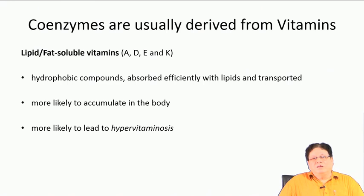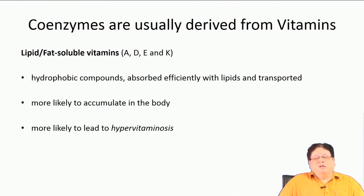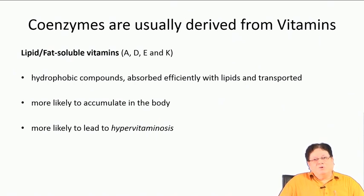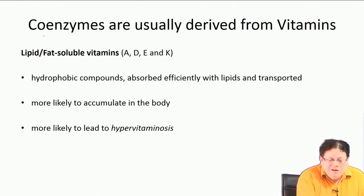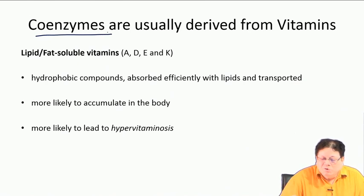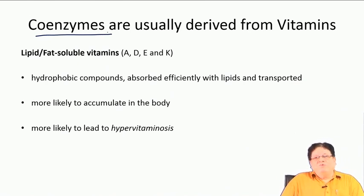Vitamins are small organic molecules which are essential for the body's growth and many metabolic activities. These metabolic activities and growth involve transformations catalyzed by enzymes, and many vitamins are actually precursors to coenzymes. So it is said that coenzymes are usually derived from vitamins.